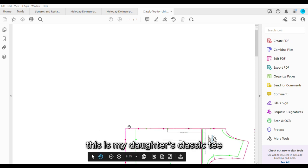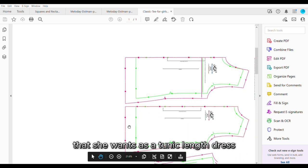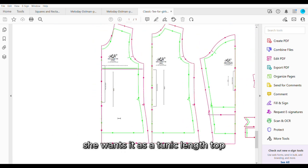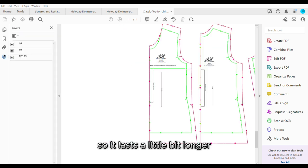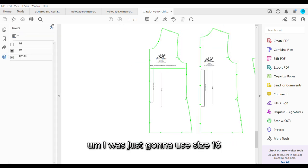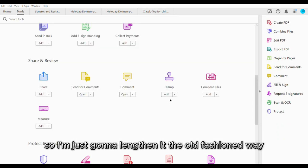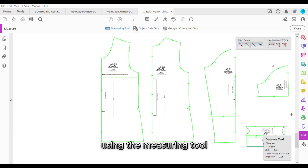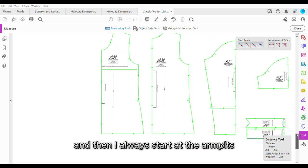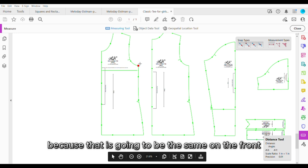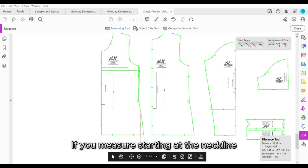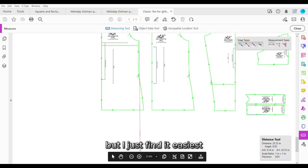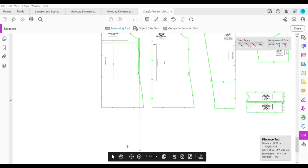And then on here, this is my daughter's classic tee that she wants as a tunic length dress. I guess that's not really accurate. She wants it as a tunic length top, but I'm going to make it into a dress. So it lasts a little bit longer. I was just going to use size 16, but I didn't like how it was layered for that. So I'm just going to lengthen it the old fashion way. This is how I do it at least using the measuring tool. I just pull that up.